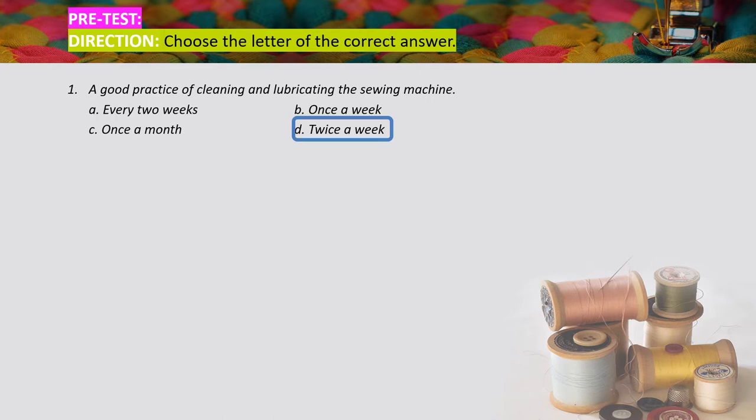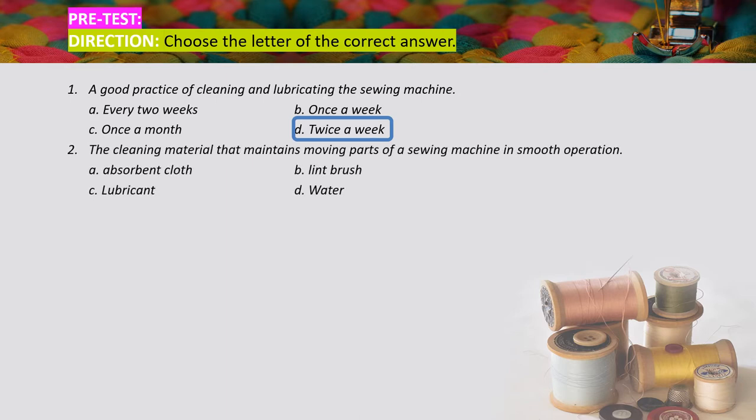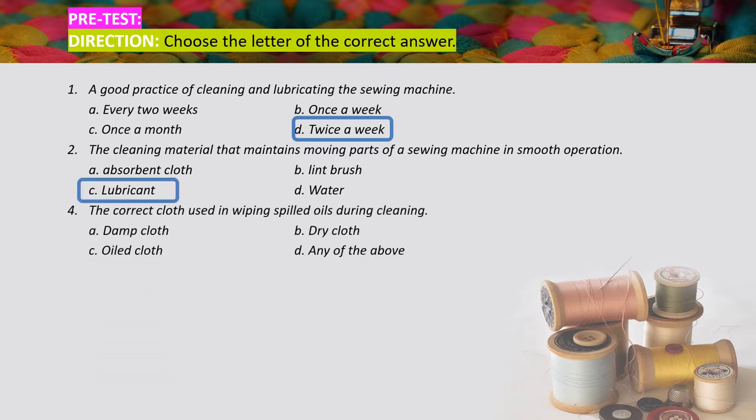Number two: the cleaning material that maintains moving parts of a sewing machine in smooth operation is — A) absorbent cloth, B) lint brush, C) lubricant, D) water. The correct answer is letter C, lubricant. Number three: the correct cloth used in wiping spilled oils during cleaning is — A) damp cloth, B) dry cloth, C) oiled cloth, D) any of the above.